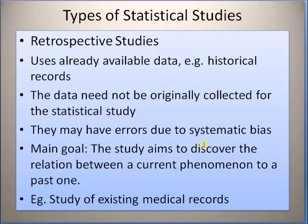Now let us look at different types of statistical studies. The first is known as retrospective studies. In this type of study, the statistician only looks at historical information, and usually this data was not originally intended for this particular study. A major disadvantage is that the observations may have systematic errors, and the goal is to relate a current phenomenon to a past one. For example, if you are trying to understand the incidence of a disease in a particular family, you can look at the medical records of their family members in the past.